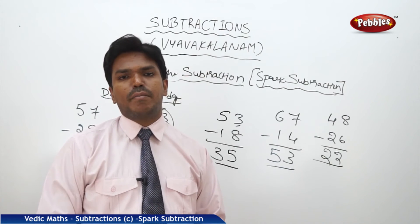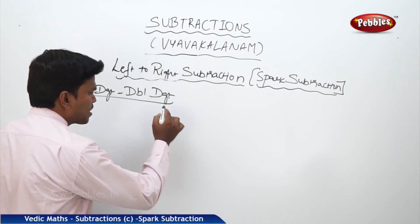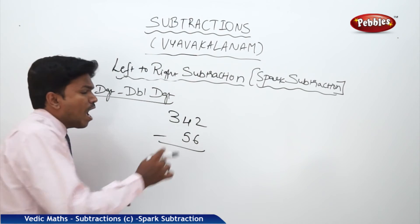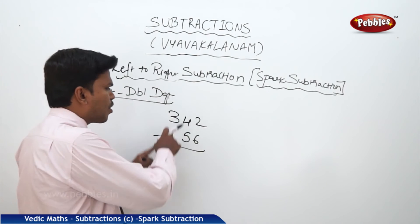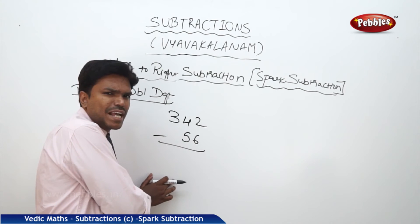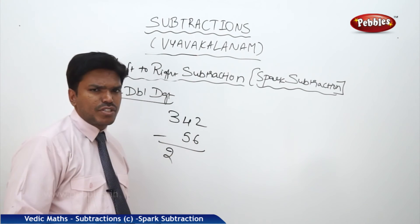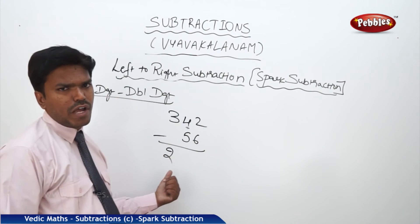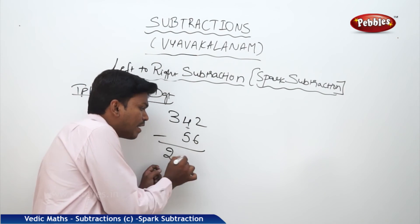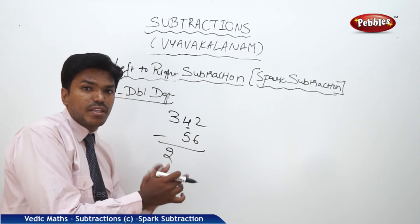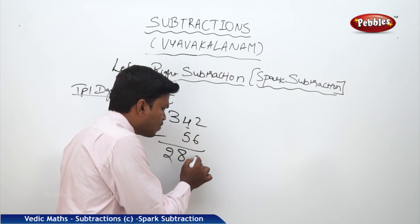Now, triple digit minus double digit. Suppose 342 minus 56. Start from the left. Before dropping 3, check whether the next numbers are mismatched — they are mismatched. So 3 becomes 2. Now 4 and 5 are mismatched. Bring the above number 4 and add to the complement of 5, which is 5. So 4 plus 5 equals 9. But before writing 9, check next numbers — they are also mismatched. So 9 becomes 8. Now 2 and 6 are mismatched. So 2 plus complement of 6 (which is 4) equals 6. Answer is 286.